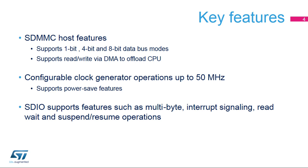The SDMMC interface interconnects with the DMA to offload the CPU during data read or data write transfer periods. The SDMMC clock generator can generate signals up to 400 kHz for the initialization phase and up to 50 MHz for cards supporting high-speed mode. To enhance power consumption, the SDMMC clock can be disabled when the SDMMC command and data buses are idle. The SDMMC controller can interface with SDIO modules with advanced features like read-wait, suspend, and resume operations.